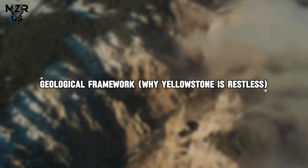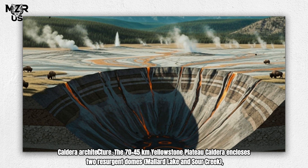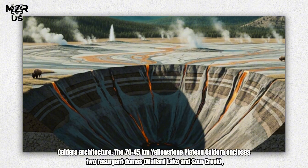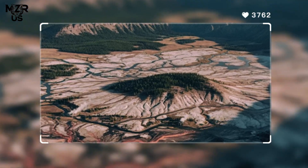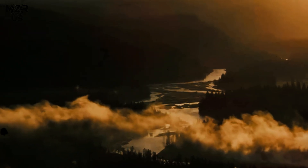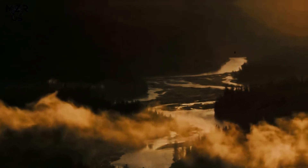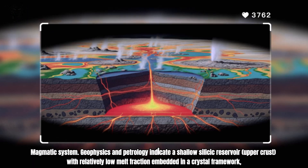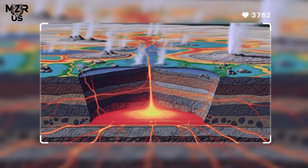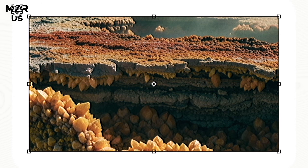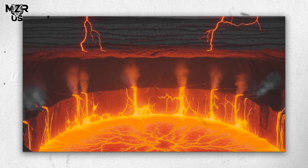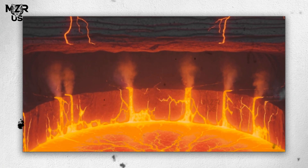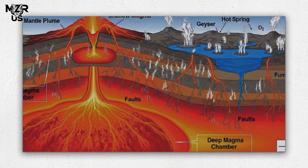Geological Framework: Why Yellowstone is Restless. Caldera Architecture: The 70×45 km Yellowstone Plateau Caldera encloses two resurgent domes — Mallard Lake and Sour Creek — the loci of repeated uplift and subsidence cycles. Geophysics and petrology indicate a shallow silicate reservoir in the upper crust with a relatively low-melt fraction embedded in a crystal framework, underlain by a deeper, warmer reservoir. Basaltic injections from depth supply heat, volatiles, and occasional stress perturbations.